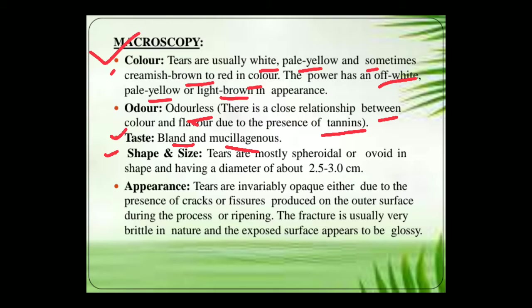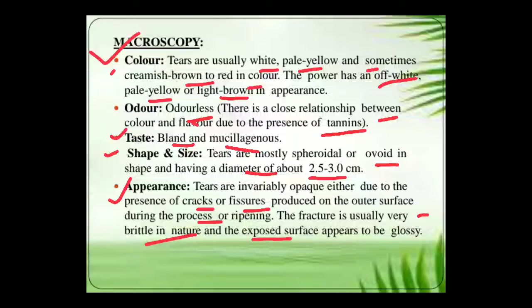Shape and size: tears are mostly spheroidal or ovoid in shape, with a diameter of around 2.5 to 3 centimetres. Appearance: the tears are invariably opaque, either due to the presence of cracks or fissures produced on the outer surface during the process of ripening. The fracture is usually brittle in nature and its exposed surface appears to be glossy.